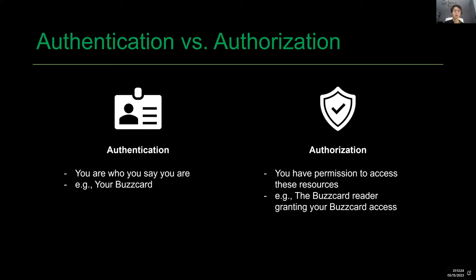Authentication is your ID — you are who you say you are, and everyone can verify that identity as a fact. An example would be your bus card; your bus card establishes who you are and everyone can verify your identity using it. Authorization, on the other hand, is having permission to access certain restricted resources using your authenticated identity. When you tap your bus card on a reader, that reader is granting your card access based on your authenticated identity.